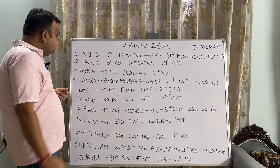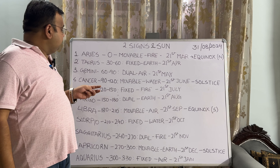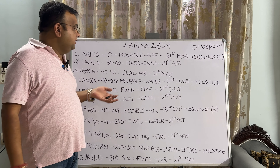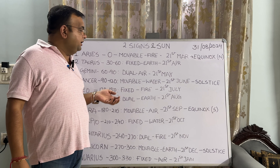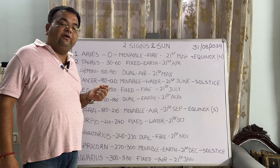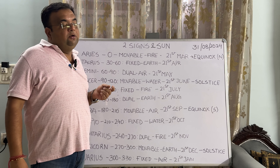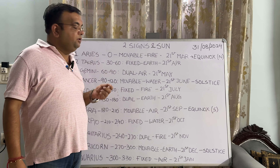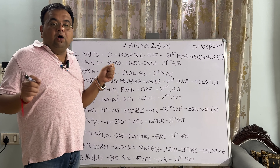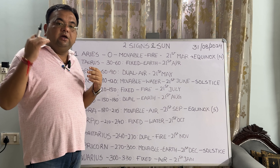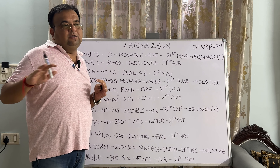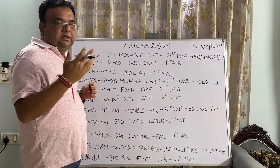The fourth sign is Cancer. It spreads from 90 degrees to 120 degrees, movable in nature, and the sun enters it on the 21st of June, which is a solstice. The 21st of June is a day which is the longest and the night is the shortest in the northern hemisphere. For people watching from Australia or the southern hemisphere, it would be exactly the opposite.